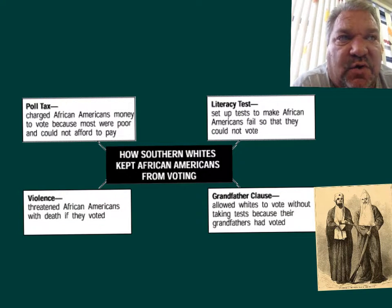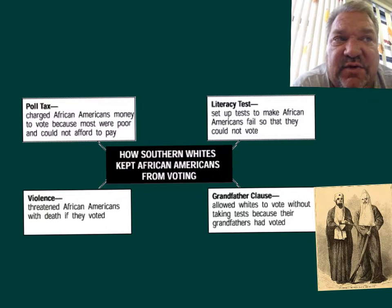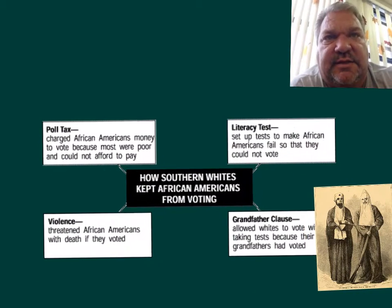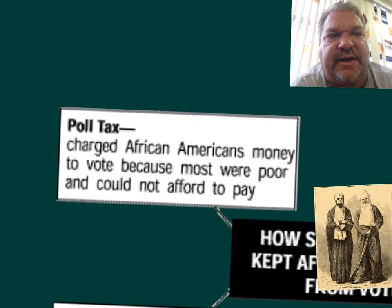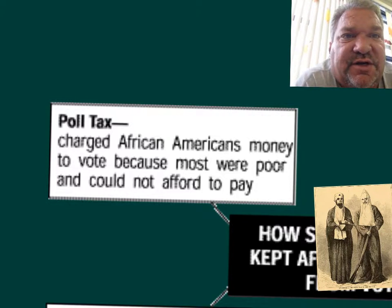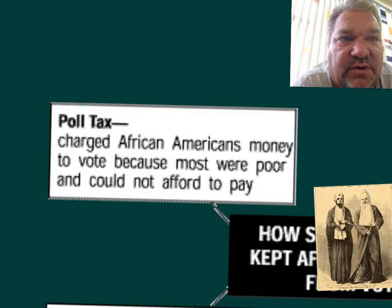Why? Because the freedmen weren't going to vote for them — they had been their slaves before. So they had to come up with a way to keep them from voting. The first way was a poll tax. They charged African Americans money to vote, because most of them were poor and couldn't afford to pay. If you're going to choose between feeding your family or paying to vote, you're going to feed your family. So there were not very many freedmen that were going to vote.